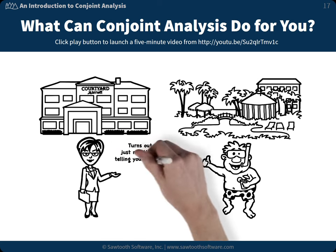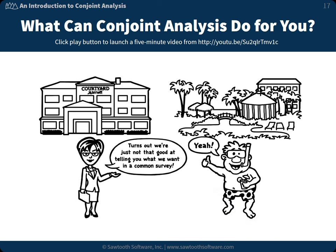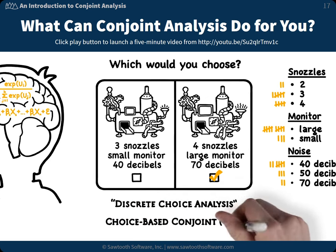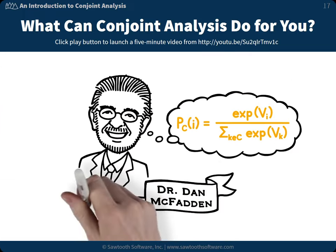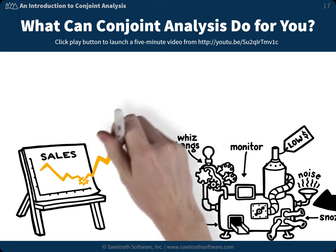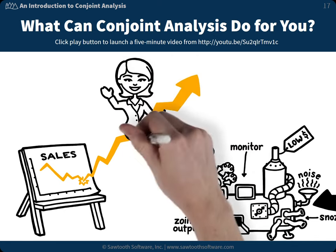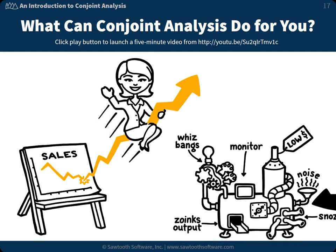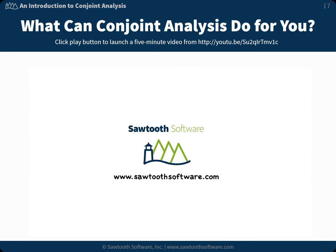Conjoint analysis is unlike common survey approaches that try to ask respondents what's important in a product and how much they're willing to pay. Instead, respondents choose from realistic product options like they would in the real world. The most commonly used conjoint analysis approach today is Choice-Based Conjoint, or CBC. It's based on some of the same theories that won Dr. Dan McFadden the Nobel Prize in Economics. We hope this presentation has helped to explain some basics of conjoint analysis and show how it can benefit those trying to create the right product at the right price for consumers. If you'd like to learn more about conjoint analysis, feel free to visit us at sawtoothsoftware.com.